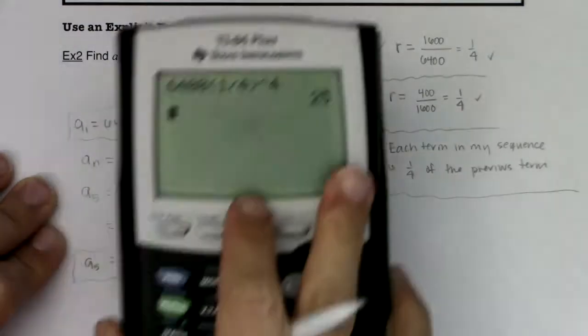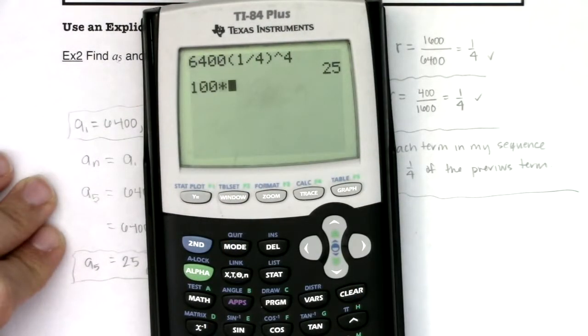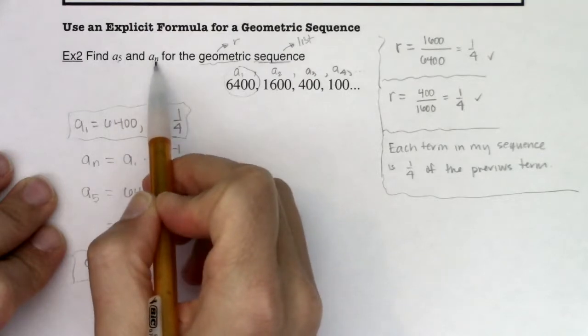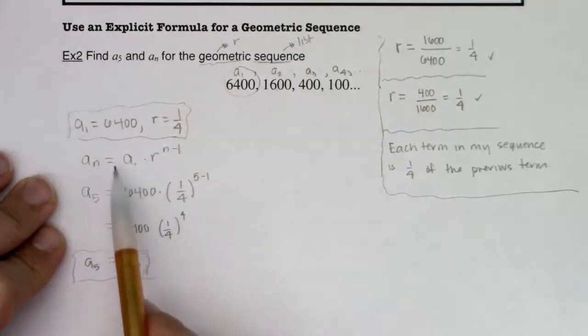And again, if I just did 100 times 1 fourth, I would have seen it was 25. And that's only half of the problem. It says find a sub 5 and a sub n. Well, when you want to find a sub n, that's when you need a sub 1 and r.